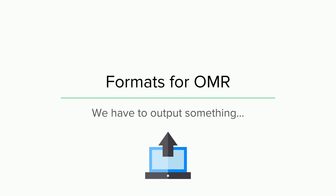We have now exhausted basically most of what there is to know about the background on a level — what OMR is doing, the state-of-the-art, what we can and cannot solve, and what's waiting for you to do. Because it's waiting for you, we need to give you the tools to do this. So now we move towards the part of the tutorial concerned with practicalities.